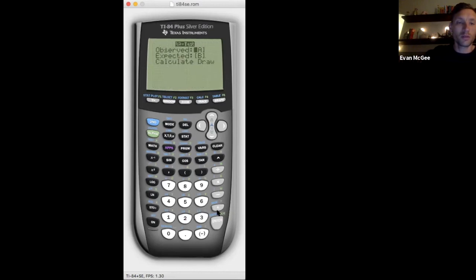There we go. Observed, it was in A. Expected will be placed in B. Hit calculate. So I'm going to come back to this test statistic and p-value in one second.